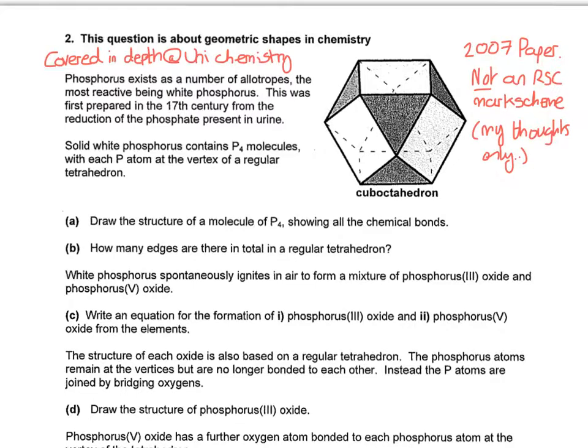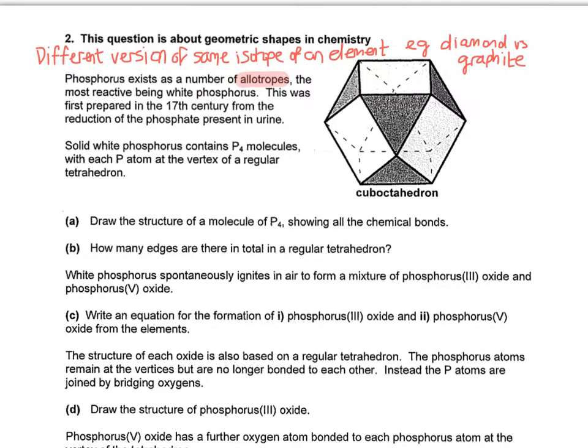So we're talking about phosphorus and the fact it exists as a number of allotropes. So an allotrope essentially means a different version of the same isotope of an element. So for carbon we've got diamond versus graphite. And for the element oxygen we've got O2 or we've got ozone which is O3. So that sort of sets the scene as to what an allotrope actually is.